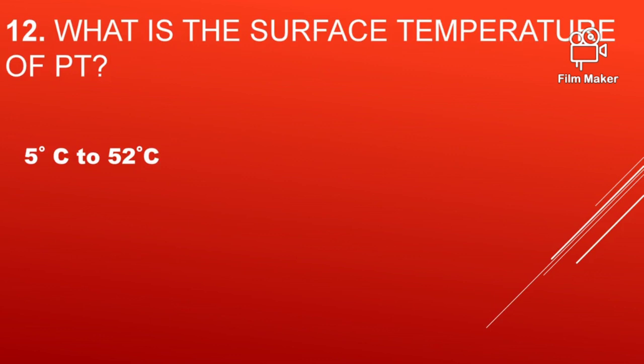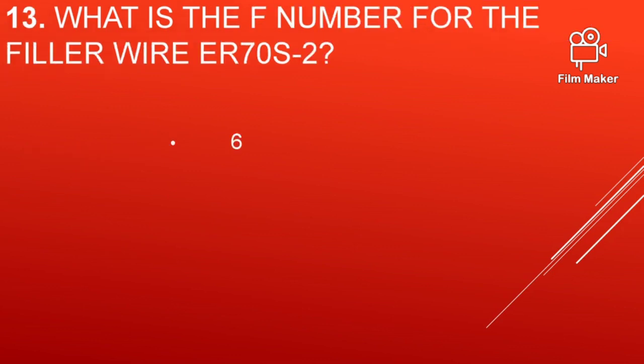What is the surface temperature for penetrant testing? That is 5 degrees centigrade to 52 degrees centigrade. Above this temperature range, the penetrant liquid will lose its properties — it will lose its viscosity.